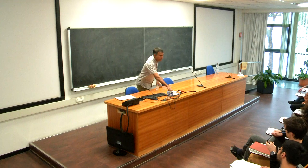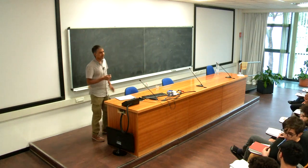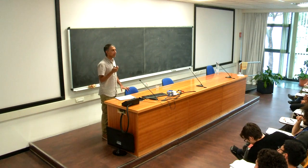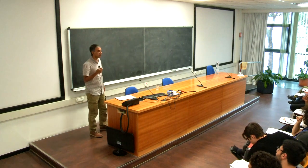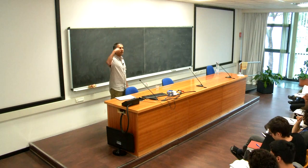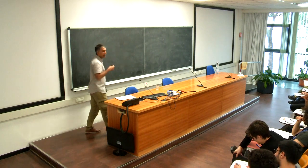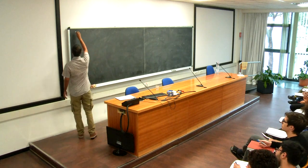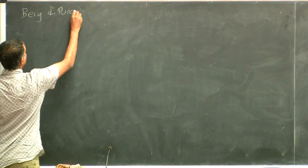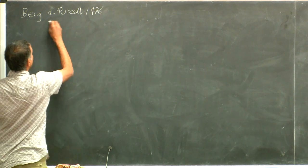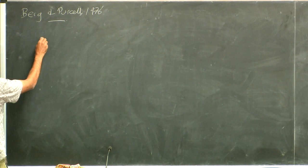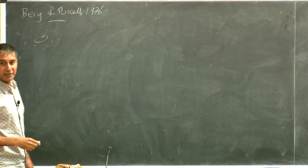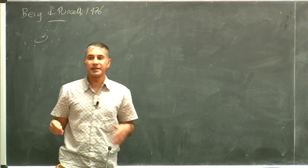Today I'm going to jump into the biology — at least start jumping into it. We are already equipped to answer quite an interesting question: how can a cell make an inference about something in its surroundings? How many of you have read the famous paper by Berg and Purcell from 1976? It's a wonderful thing to read. They basically asked the question: you have a bacterial cell and there's some stuff outside, and the cell is trying to read information about what's outside and react accordingly.